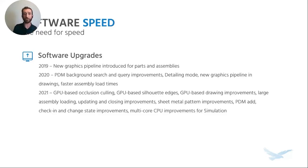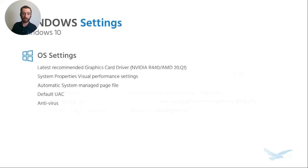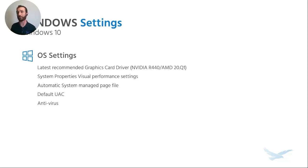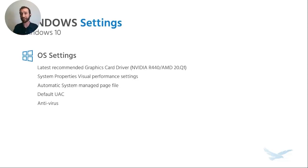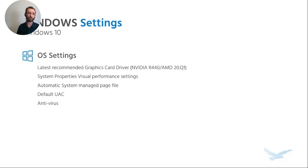These software improvements simply require you to install the latest version — you automatically gain these performance improvements. At the OS level, install the recommended driver that SolidWorks currently recommends. For NVIDIA graphics cards, you want the NVIDIA R440 branch. They no longer certify a specific version number, just a general top-level branch. So if any of your graphics card driver versions start with 440, it is on the currently recommended branch.